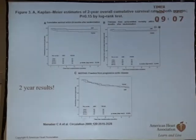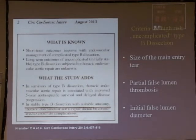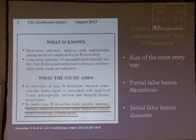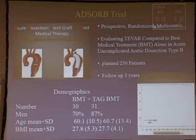Regarding the INSTEAD trial: after the first two years, everybody thought there was no difference, but later there is a clear advantage for the treated group at five years. Our study tries to identify so-called uncomplicated type B dissections which have a higher risk for future complications. Key factors are partial false lumen thrombosis and initial false lumen diameter, and in stable type B dissection with suitable anatomy, TEVAR should be considered to avoid late complications.